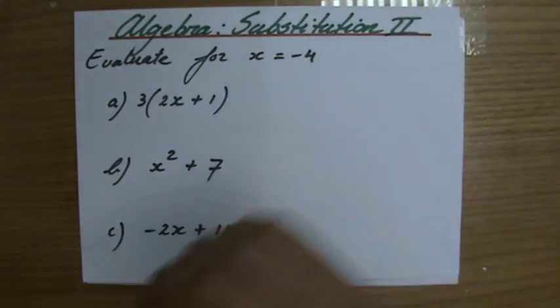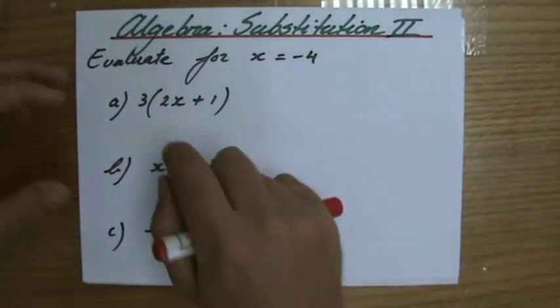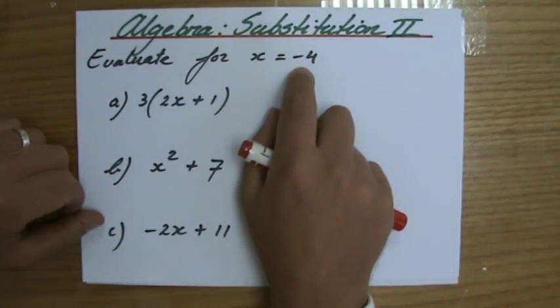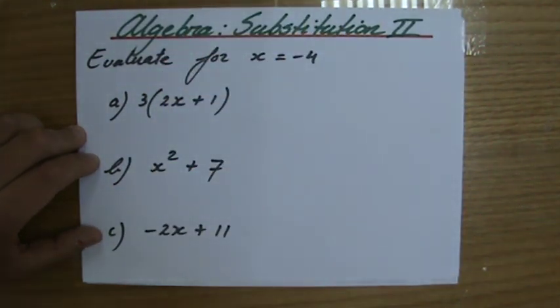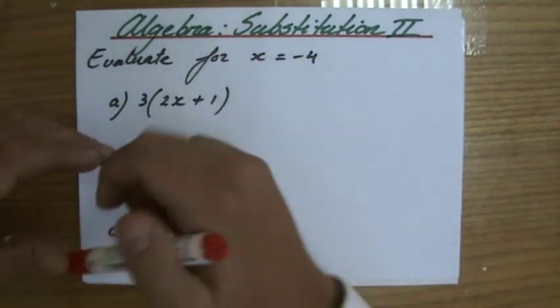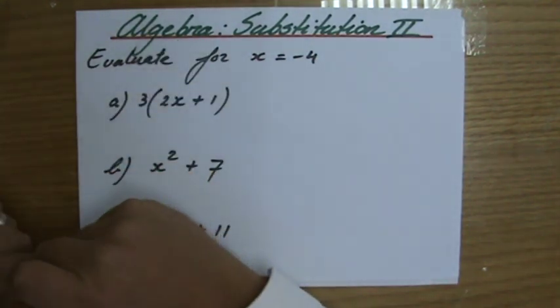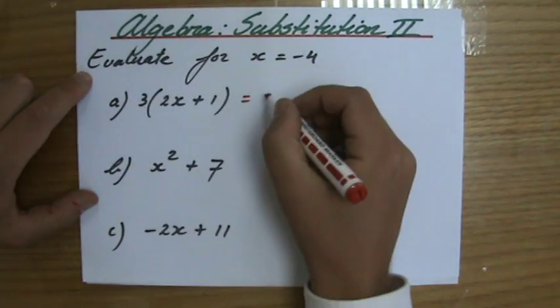So we're still doing substitution, and in my previous video I said substitution means substituting x for the number they're giving you. So evaluate the following expressions. I've written down three questions for x equals minus 4. And especially with negatives, you have to be extra careful. But it's nothing to worry about, really. So what's going on here?